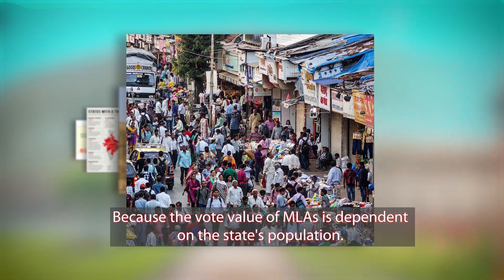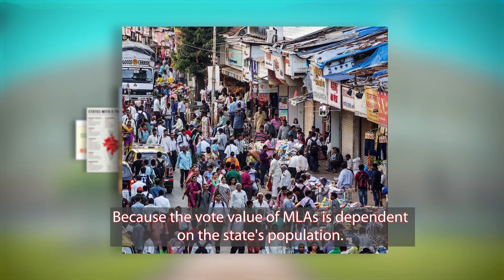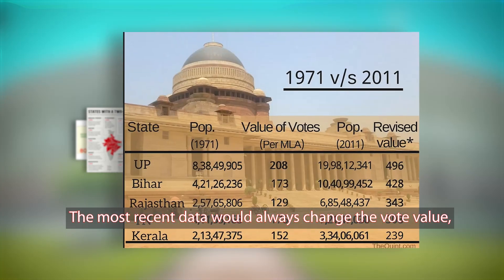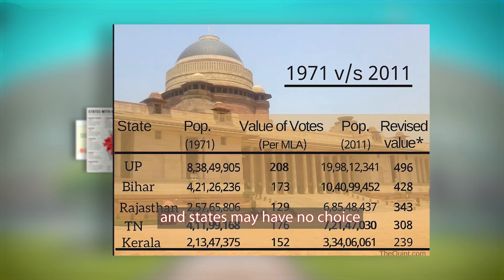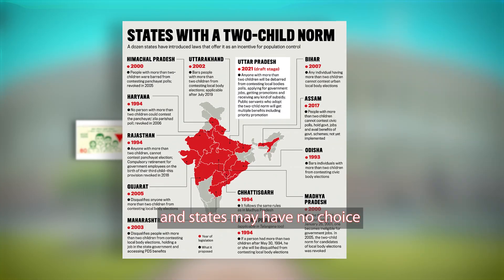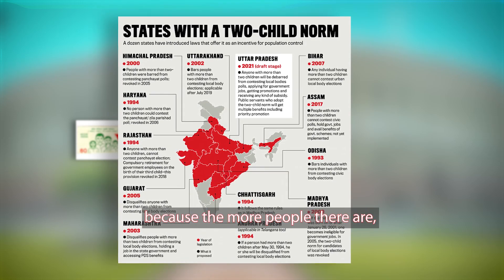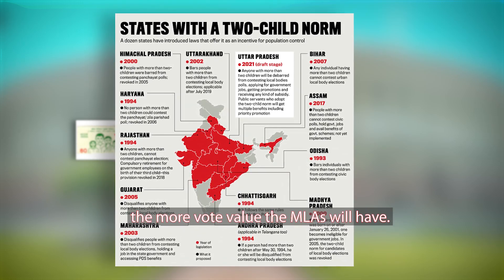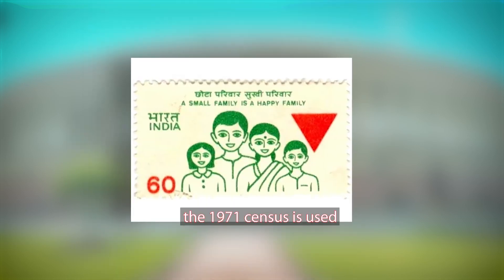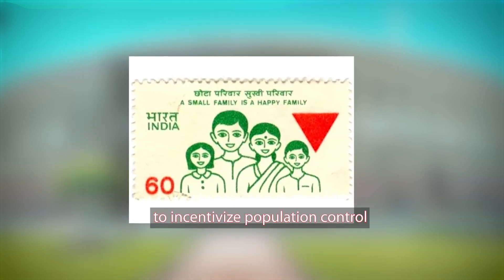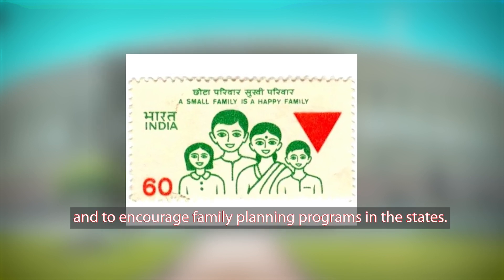Why? Because the vote value of MLAs is dependent on what the state's population is. The most recent data would always change the vote value, and states may have no choice but to keep their population high — because the more people there are, the more vote value the MLAs will have. Hence, the 1971 census is used to incentivize population control and to encourage family planning programs in the states.